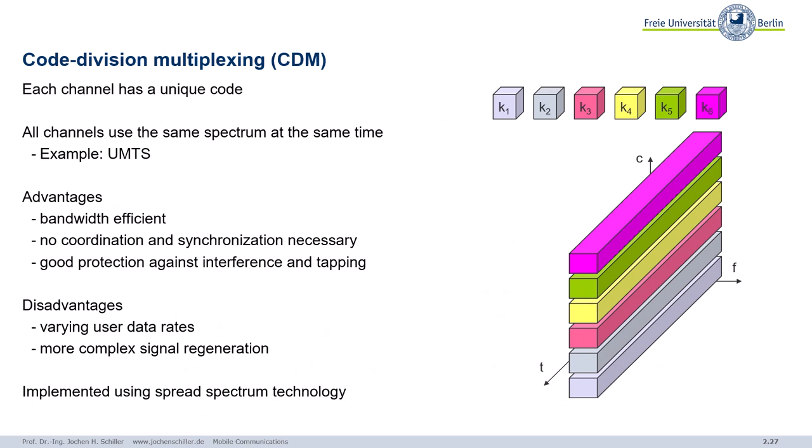Now a brief look at Code Division Multiplexing, which is very typical for wireless communication systems. The idea is that each channel has a unique code. I will cover this in detail in chapter three, when we discuss how we actually code bits before transmitting them. For now, just know that there are ways to code data so that multiple senders can transmit at the same time and at the same frequency.